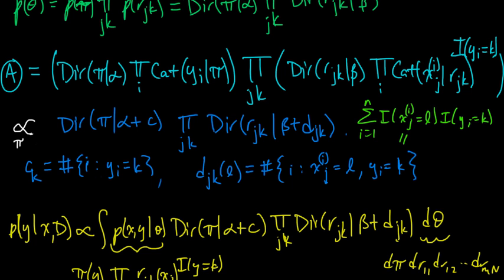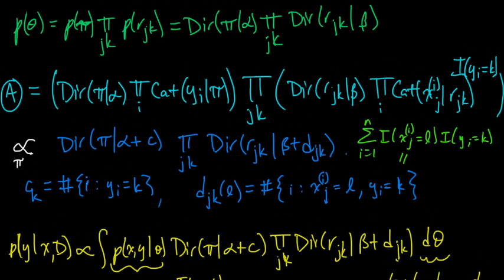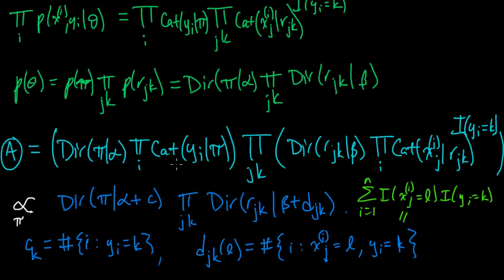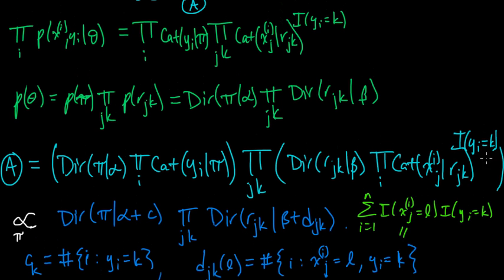That should be proportional to, this is proportional to as a function of pi. And, oh, so the reason why that's sufficient, so this is the, well, this is the Dirichlet categorical conjugacy. And that was a necessary step. And this is proportional to this with respect to pi. And it's also proportional with respect to y. Y doesn't show up in here at all, right?